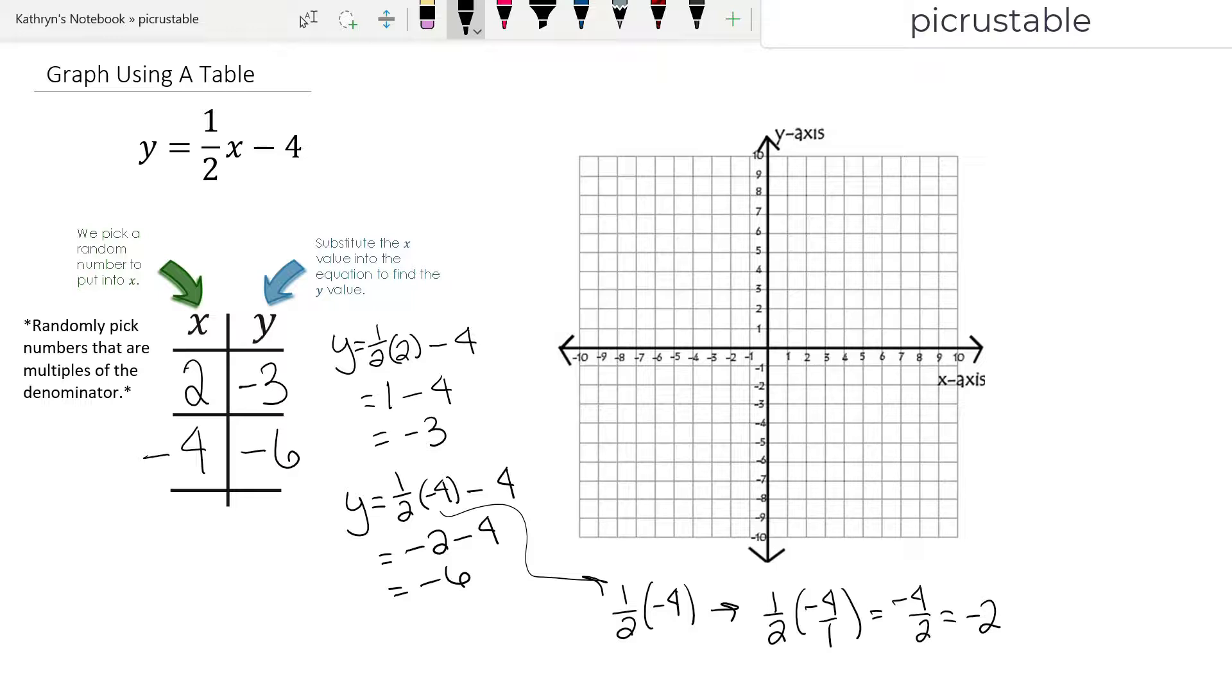Let's do one more. What's really cool is 0 always works. So I'm going to put a 0 in there. So y equals 1 half x minus 4. I'm going to put 0 in for x. So y equals, well, 1 half times 0 is 0, 0 minus 4, which is negative 4.